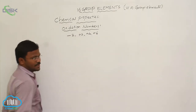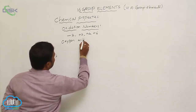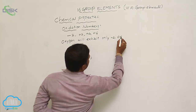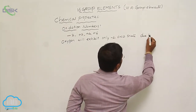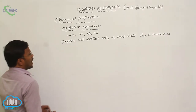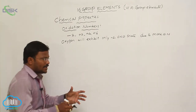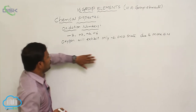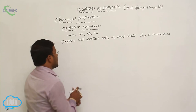Especially, oxygen will exhibit only a -2 oxidation state. This is due to its high electronegativity. As oxygen is the most electronegative atom, it attracts electrons strongly. When any atom attracts electrons, it acquires a negative charge.